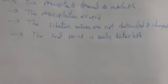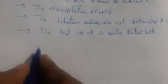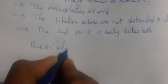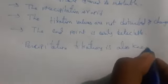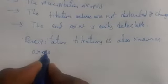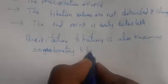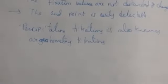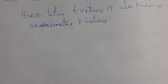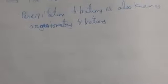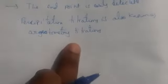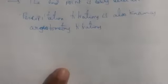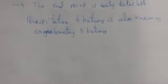Precipitation titrations are also known as argentometry titrations. Why? Because in precipitation titrations, in the burette — that means the titrant we are taking — it is always a silver solution. The involvement of silver compounds in volumetric analysis is what we call argentometric titrations. So in the burette you are always going to take silver compounds, that is why it is also known as argentometric titrations.